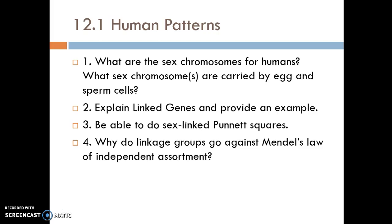Number two: explain linked genes and provide an example. Linked genes are when genes are really close together on the same chromosome, and they will appear to be linked, which goes against Mendel's law of independent assortment. But linked genes can get separated from each other through crossing over. If the two genes are really close together on the same chromosome, their chance of being separated is very unlikely compared to if they are far apart on the same chromosome, where they have a greater chance of being separated through crossing over.